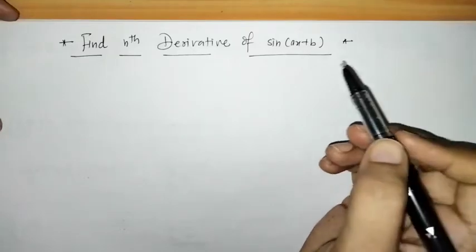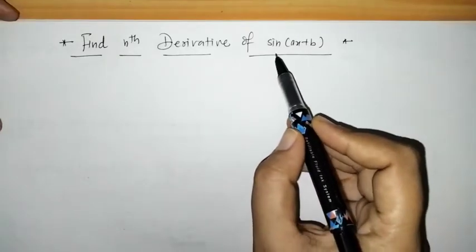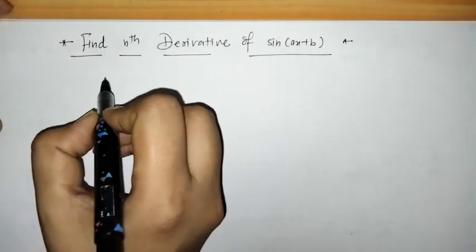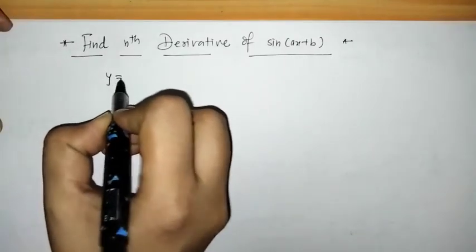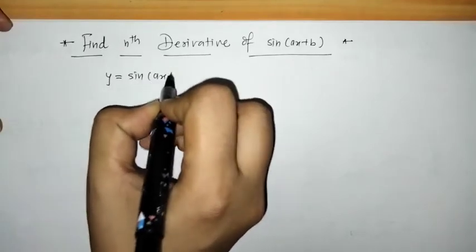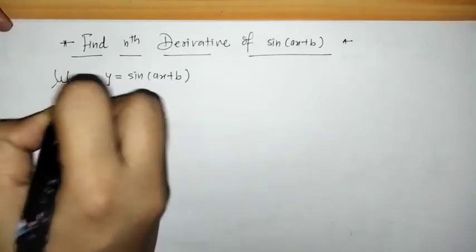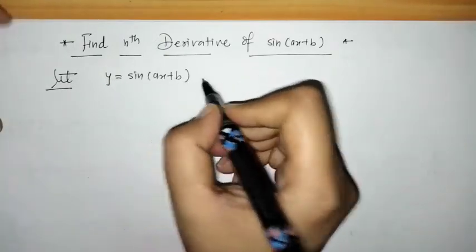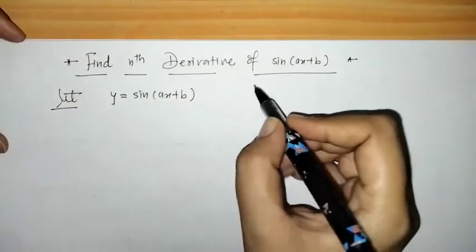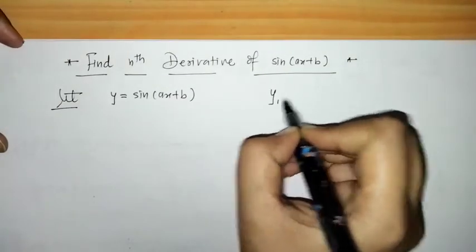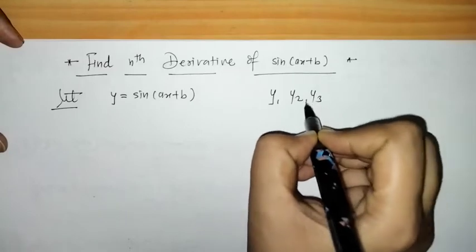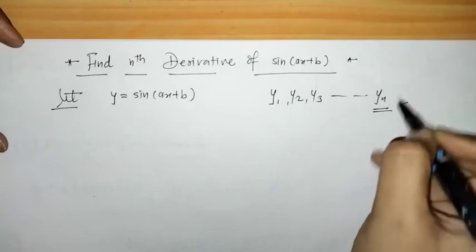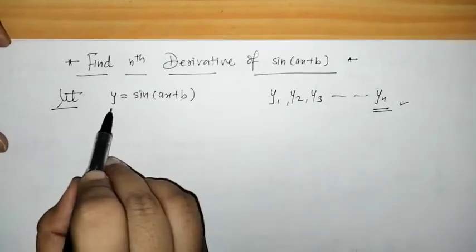Hello everyone, welcome to Unlock Maths. Today we have to find the nth derivative of sine(ax + b). We consider this function y = sin(ax + b), where a and b are constants. We have to find its derivatives y1, y2, y3, up to yn — that means we have to find the nth derivative of y.